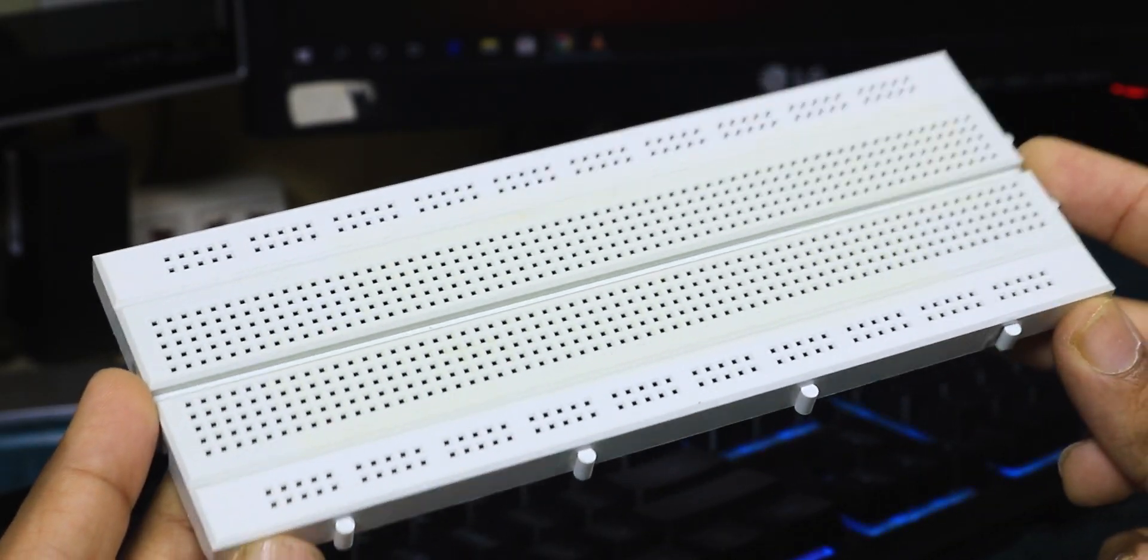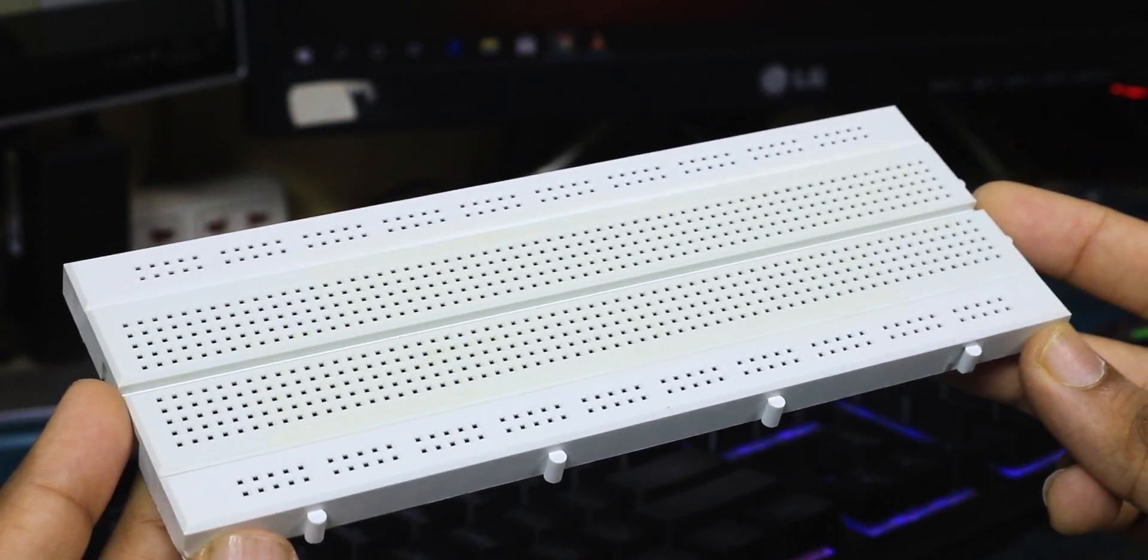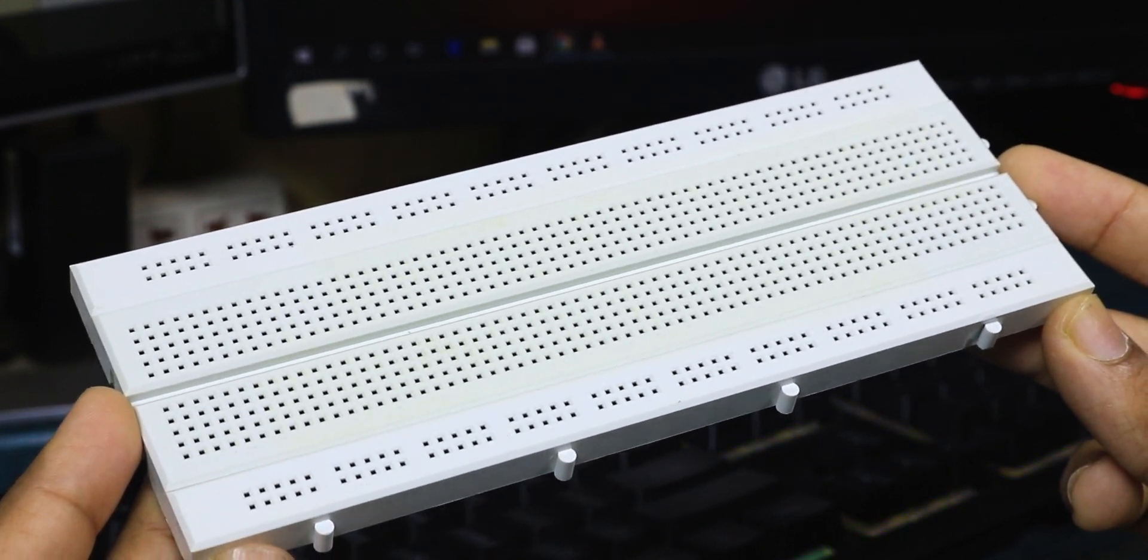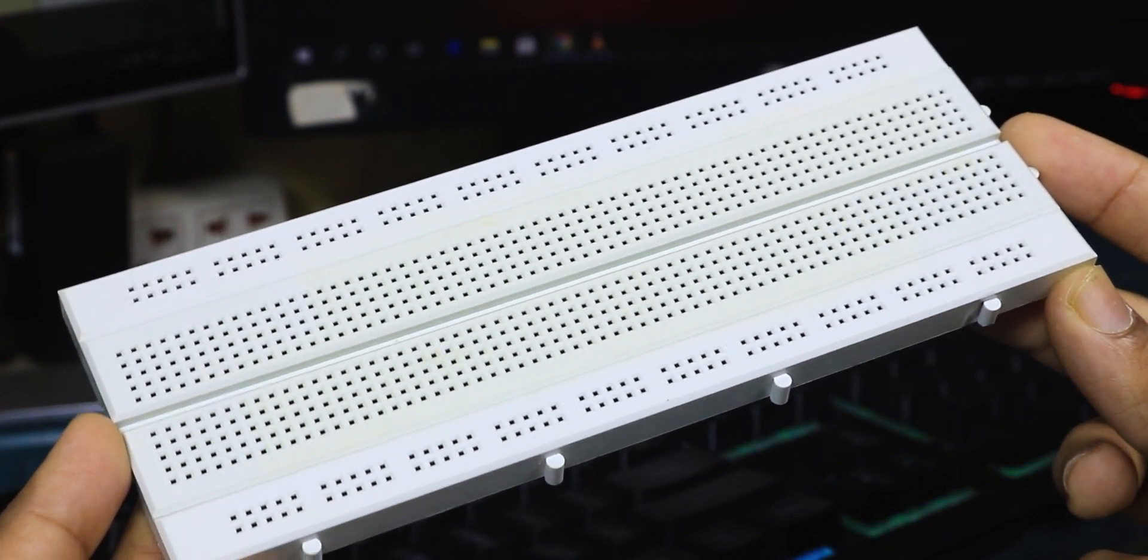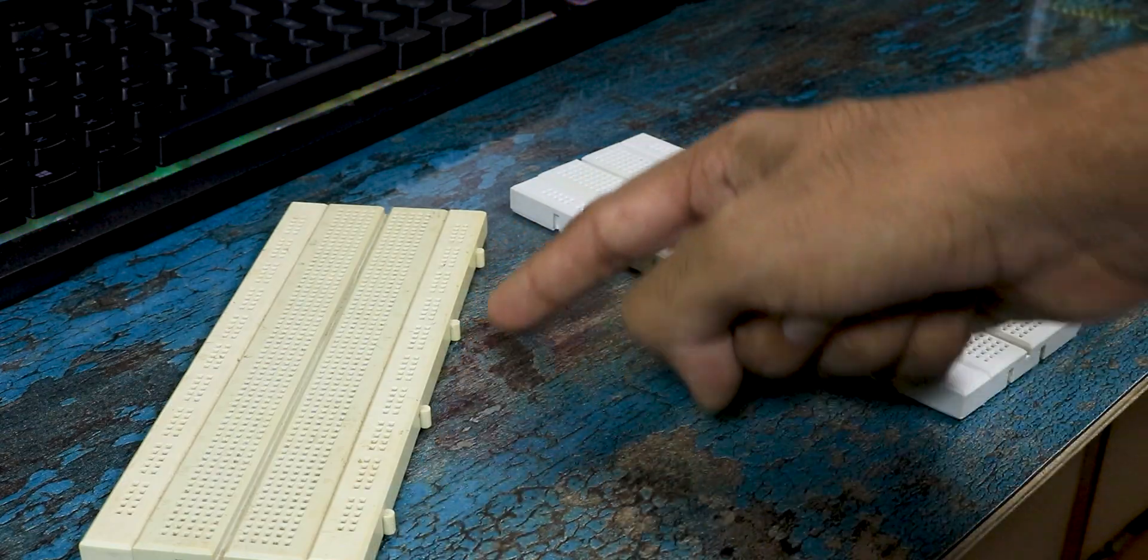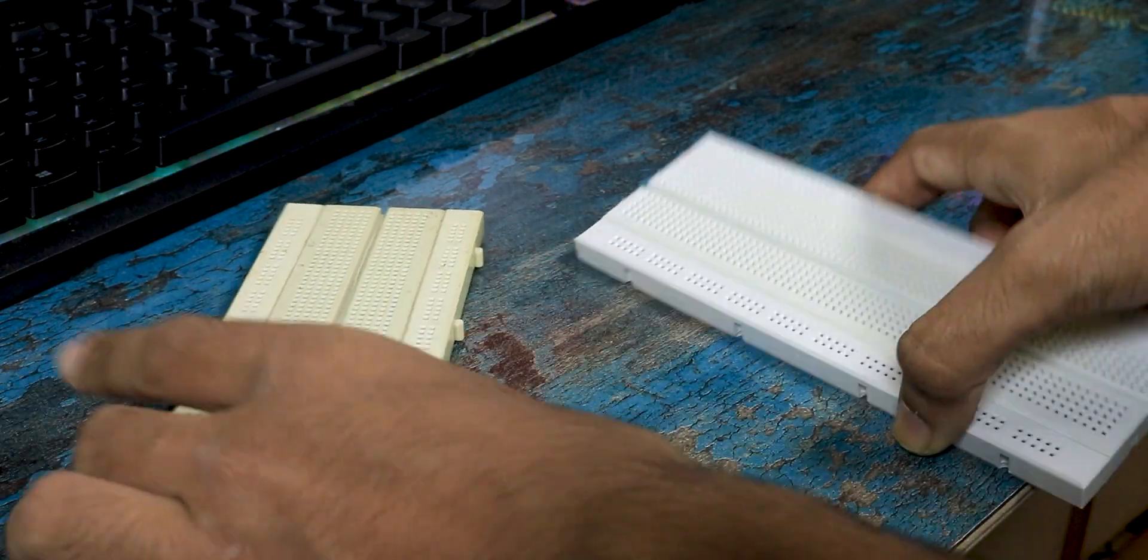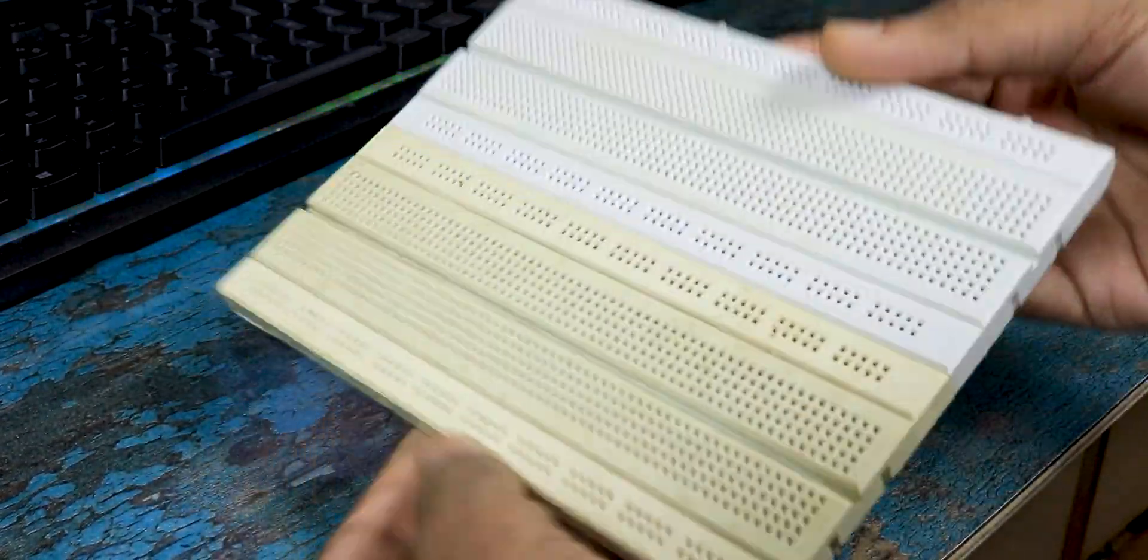This is how a generally full-size breadboard looks like. They come in different shapes and colors. It doesn't really matter what size you get but I highly recommend getting a full-size one. If you have more than one breadboard you can easily combine them like this using these tabs to form an even larger breadboard.